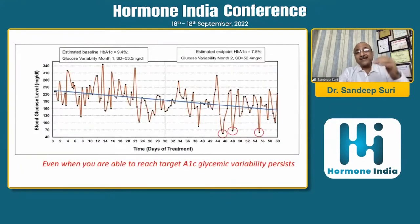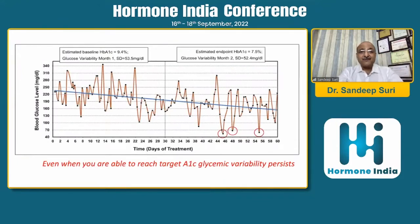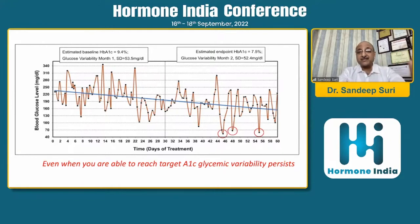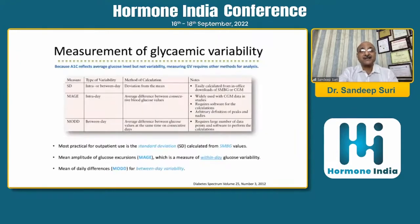We have to look at something else. Glycemic variability should be addressed even when glycemic control is achieved. Moving from 9.4 to 7.45 HbA1c, you can see glycemic variability persists - rather, it increases as you approach nearer to the targets.